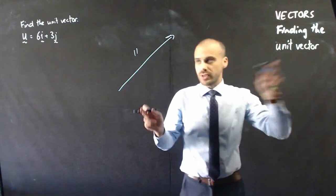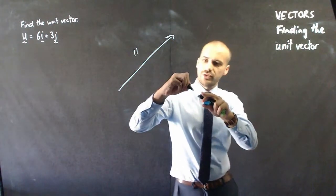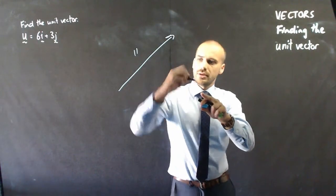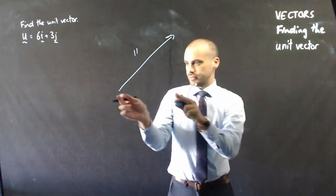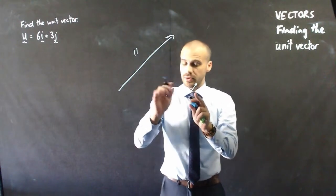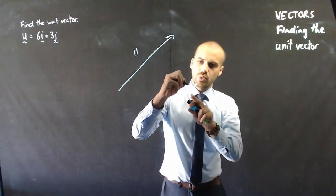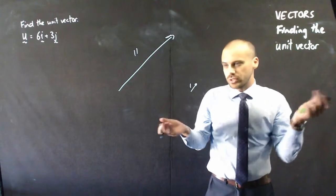The unit vector is simply a scaled down version of the same vector. Well, but the magnitude of this vector is 1, that's why it's called a unit vector, a single unit.